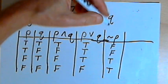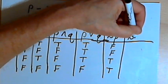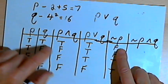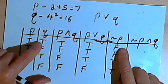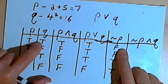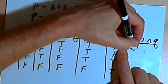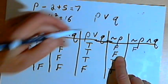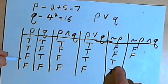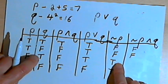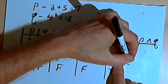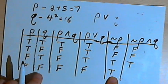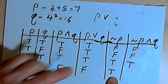If I wanted the conjunction of not P and Q, I can see what happens when I combine the not-P column and the Q column. When not P is false and Q is true, the conjunction is false. When not P is false and Q is false, the conjunction is also false — I need them both to be true. When not P is true and Q is true, the conjunction is true. If not P is true and Q is false, that's false also.